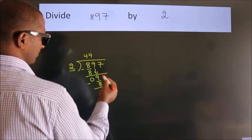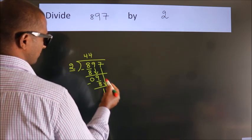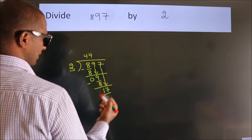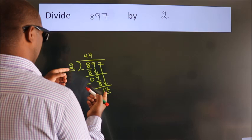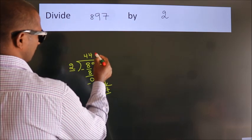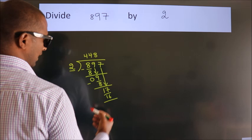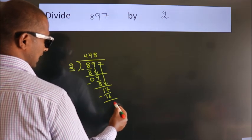After this, bring down the beside number. So 7 down. So 17. A number close to 17 in 2 table is 2 eights, 16. Now, we subtract. We get 1.